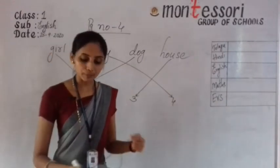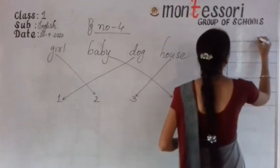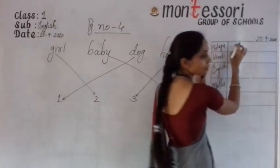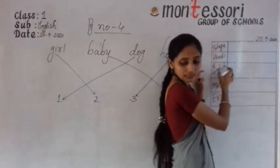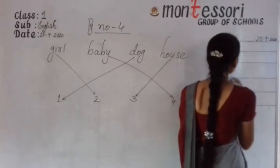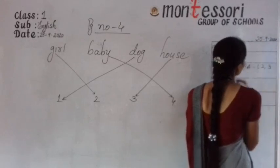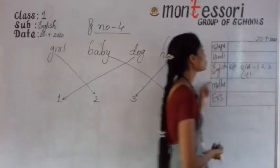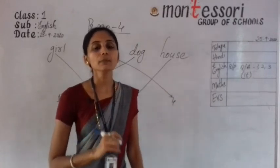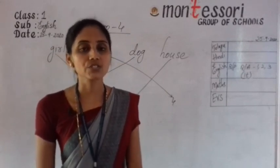Now, all of you please note your homework. Write the date: 25-09-2020. First one is Telugu, second one is Hindi, third one is English. Today's homework: read and practice question and answer one, two, three, four — one time. Question one time, answer one time. After practicing, you have to post to your concerned class teacher. That's all for today. Thank you.